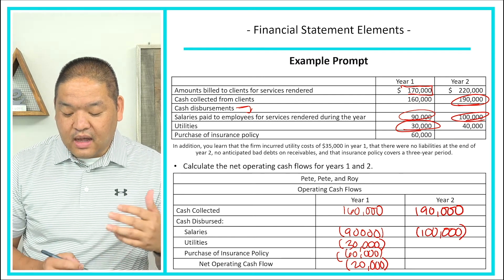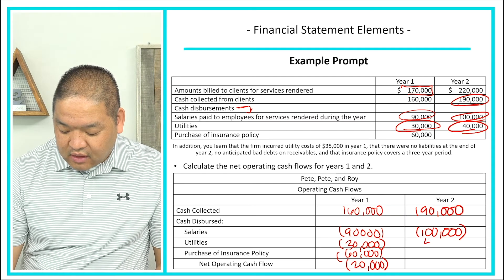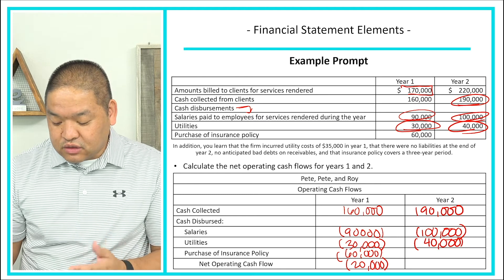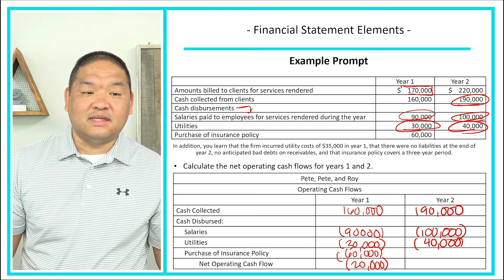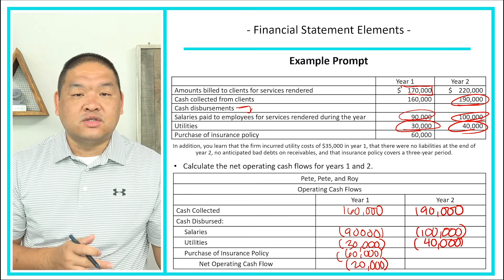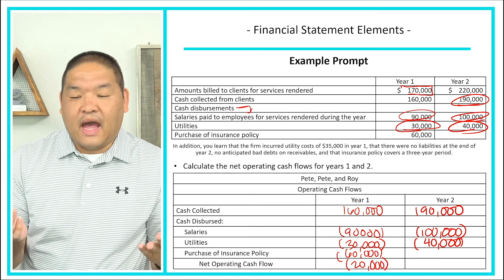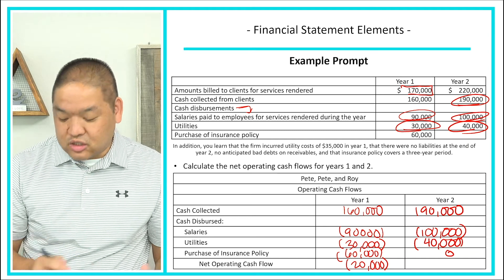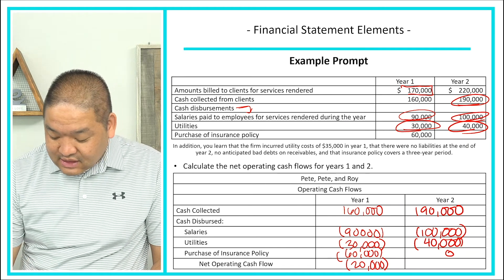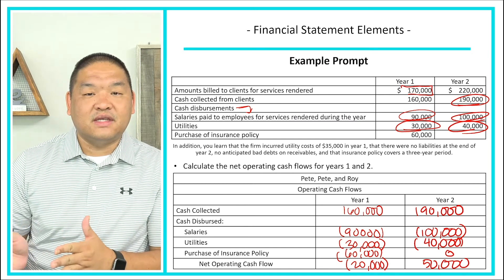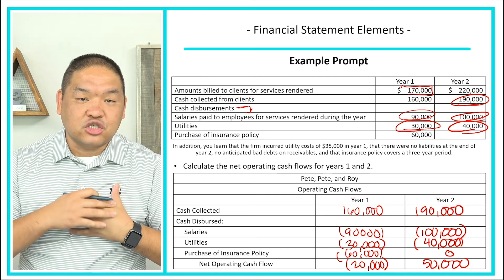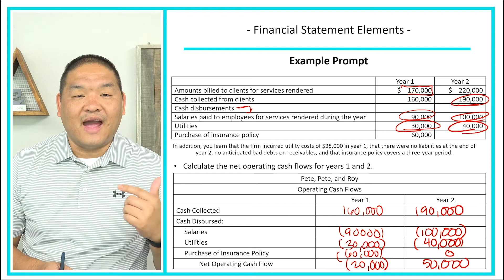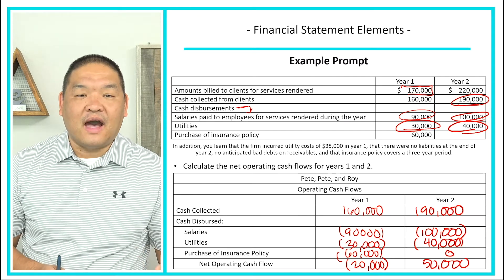Utilities paid in year two were $40,000, so we subtract that. For the insurance policy in year two, we paid nothing — because we already paid $60,000 in year one for three years, so no new payment is due. That gives us $190,000 minus $140,000, equaling a positive $50,000 net cash inflow. So year one had a $20,000 net cash outflow and year two had a $50,000 positive net operating cash flow.